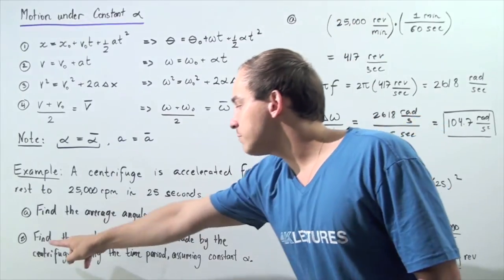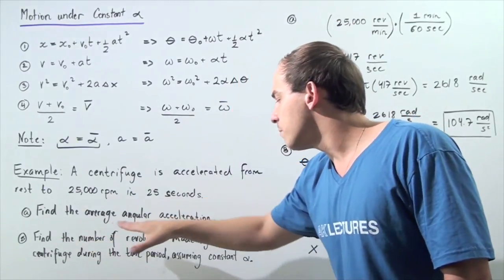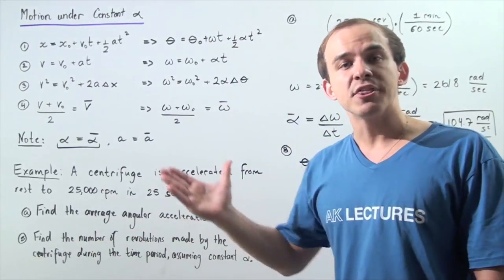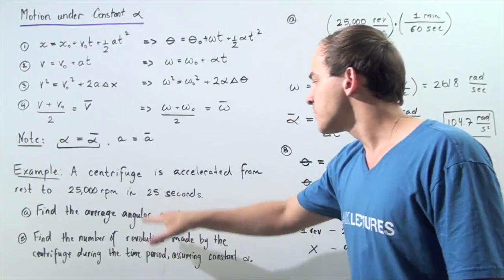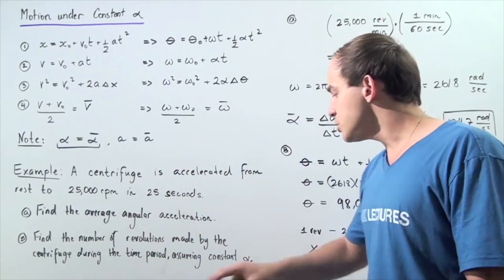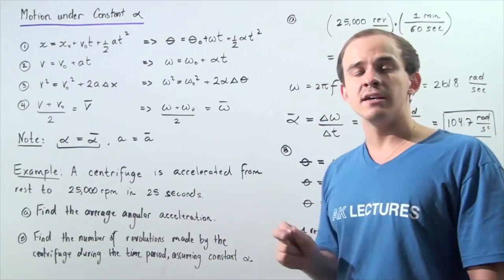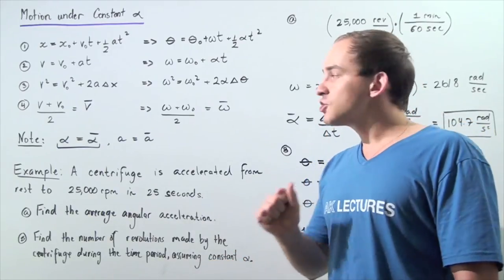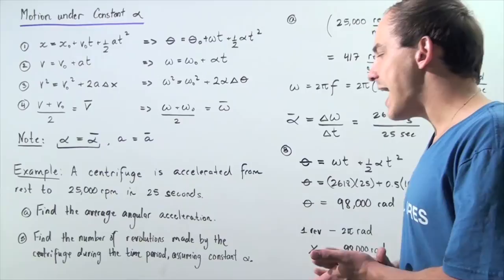In part B we want to find the number of revolutions made by the centrifuge during the time interval of 25 seconds, assuming constant angular acceleration. So let's begin with part A.